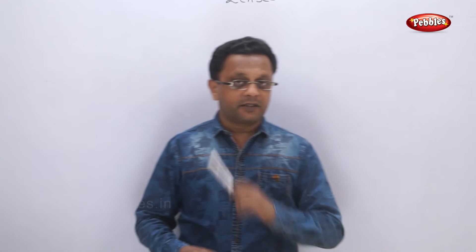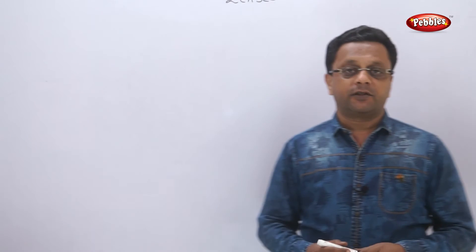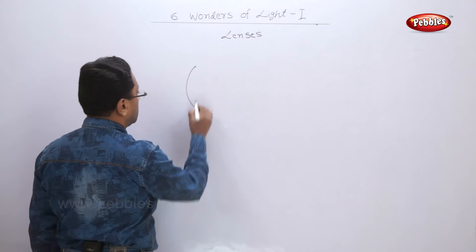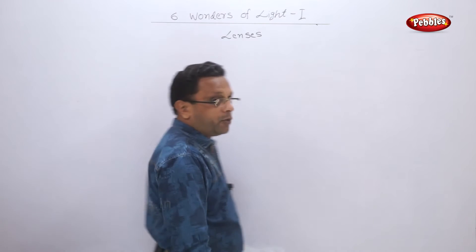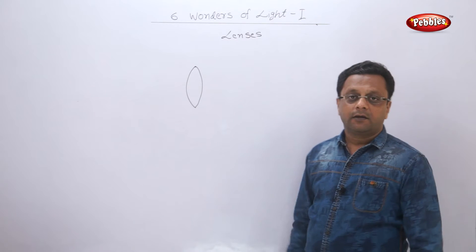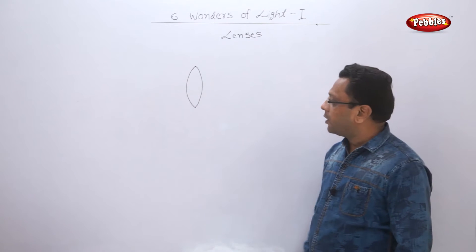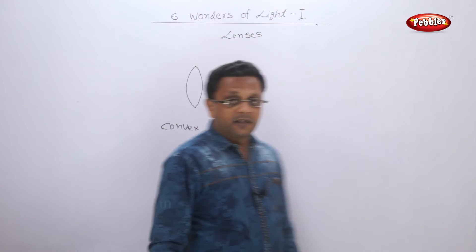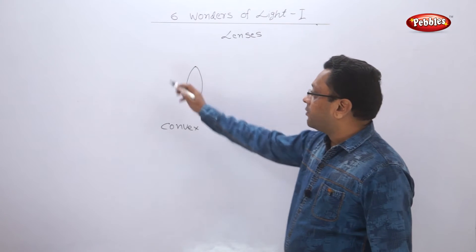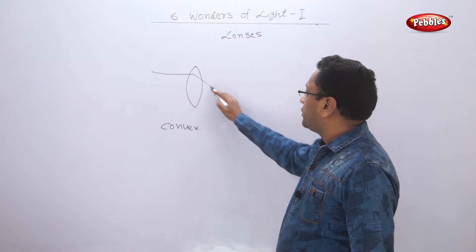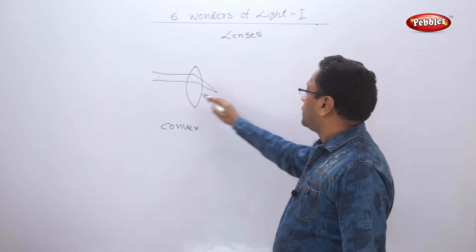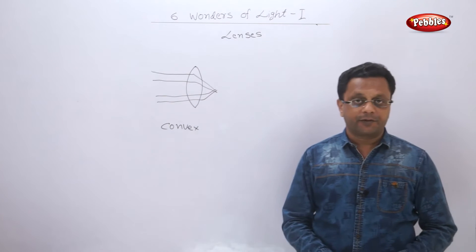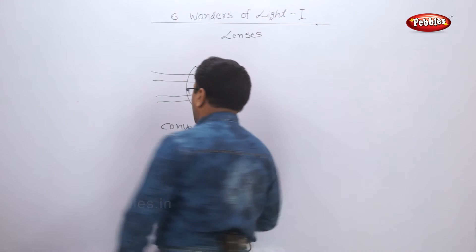Now basically we are going to study two types of lenses. One is the concave and one is the convex. The convex lens means you have a bulge at both the center and it is narrow at the end. What is the peculiarity of this lens? This lens is a converging lens. Whenever the incident ray falls on this, it converges. It accumulates the light rays. So this is also called as converging lens.